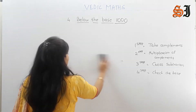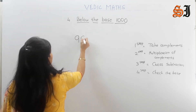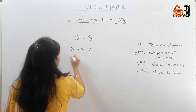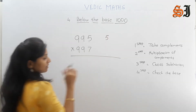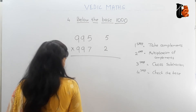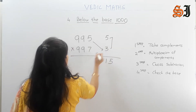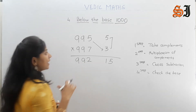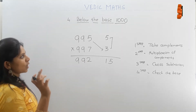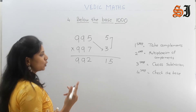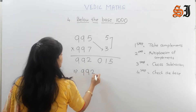Next question. How many symbols are coming? 10 minus 7 is 3. Multiply, cross subtraction: 9, 9, 5 minus 3 is 2. Then 95, we have 3 minus. 9 and 2 — check the base. Base is 1000, means 3 zeros. There are 2 digits on the right side, so we put one 0 here: 9, 9, 2, 0, 1, 5.